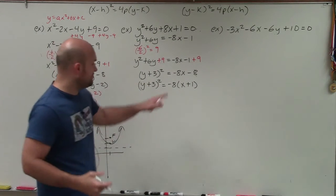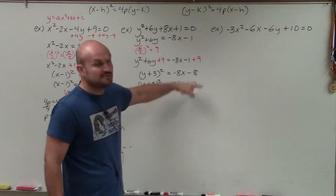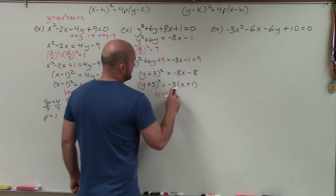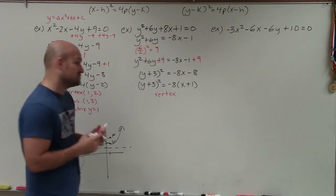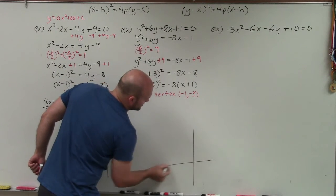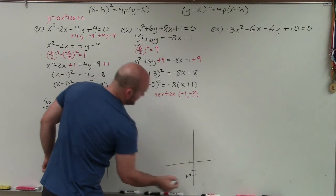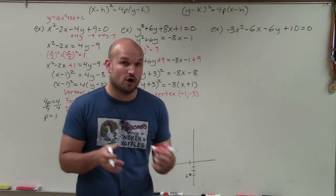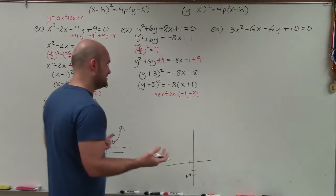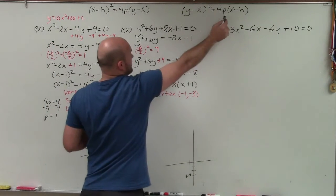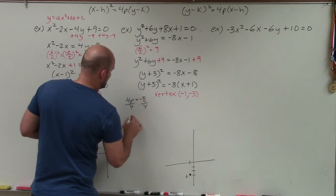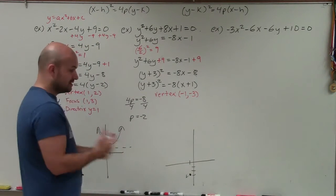I can verify the factoring: −8 times x is −8x, and −8 times 1 is −8 — looks good. Now identify the vertex. Remember: h is always with x, k is always with y. So my vertex is (−1, −3). I'll plot that. Since y is squared, the parabola opens left or right. My 4p equals −8, so dividing by 4 gives p = −2. That means the focus is 2 units to the left and the parabola opens left.